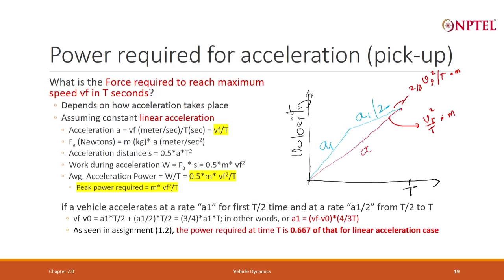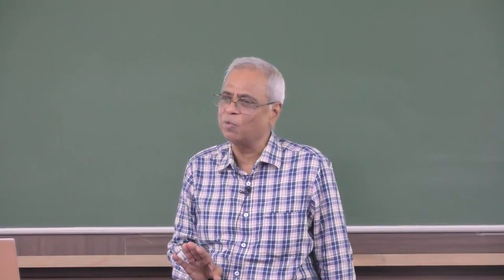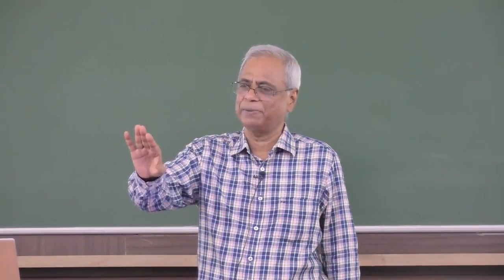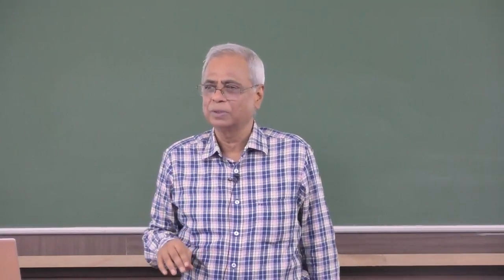So very often the vehicle may be power-constrained. If the vehicle is power-constrained, the motor is power-constrained, you do not want to go at a constant acceleration. You may want to accelerate more and then slow down.